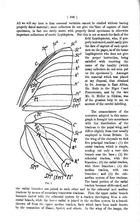Tibia: 4th leg segment, between femur and tarsus. Tomentum: a pubescence consisting of soft, entangled hairs pressed close to the surface of the integument. Tornus/tornal: posterior corner of the wing. Trochanter: 2nd leg segment, between coxa and femur.